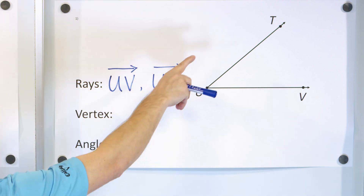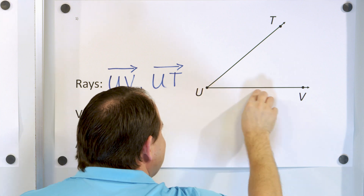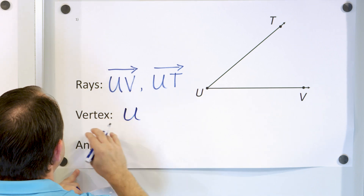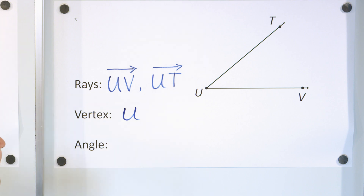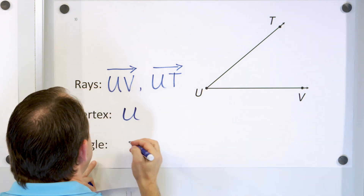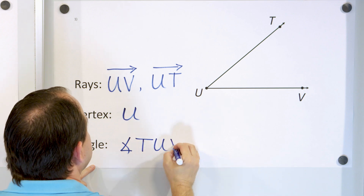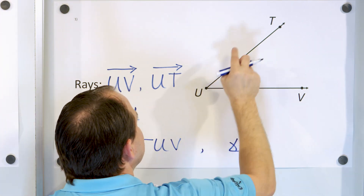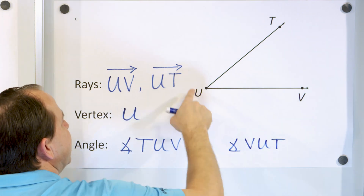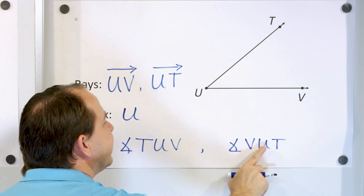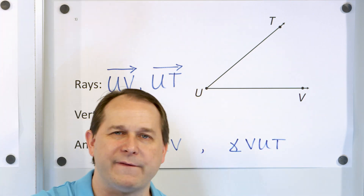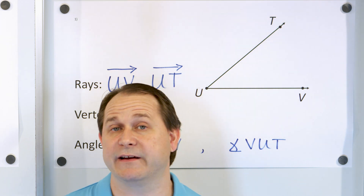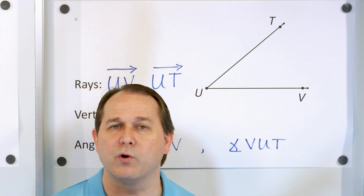The second question is: what is the vertex of this angle? The vertex is the middle point where the two rays join up, so the vertex is just the point U. Now how do we name this angle? We're going to call it angle TUV — notice U is in the center. You could also name it angle VUT; as long as U is in the center, either name is fine for the angle.